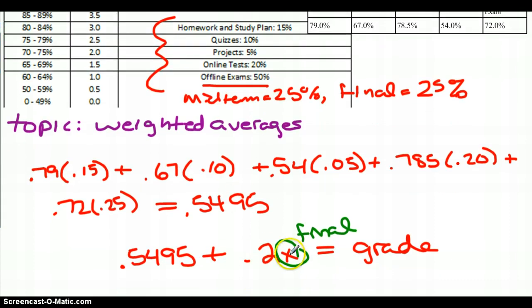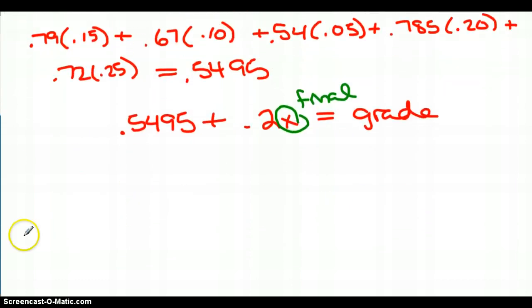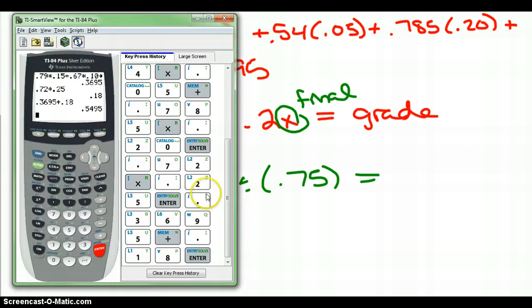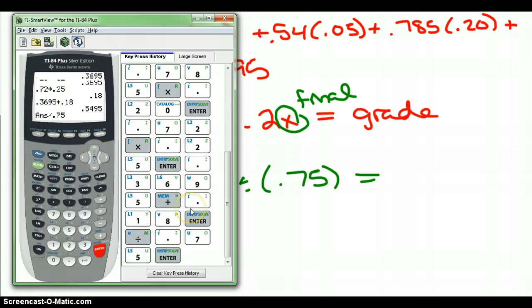And so if my final exam is worth 25%, that's the only category that I don't have. I've got homework, quizzes, projects, online tests, and a midterm. This is the only one that I'm missing. So I'm missing 25%, which means I've got 75% of the scores reported. So if I want to get my current score, I'm going to take that .5495 and divide it by what portion of the grade that is. So I'm dividing it by that 75%, 100% minus 25% is 75%. So let's go calculate that number real quick. If I divide this by .75, my current score without taking the final looks to be 73.26. So I'll just say 73.3%.